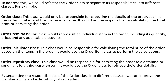For example: an Order class, which would only be responsible for capturing the details of the order such as the order number and the customer name — not for calculating the total price or persisting the order. An OrderItem class, which would represent an individual item in the order including its quantity, price, and any applicable discounts. An OrderCalculator class, which would be responsible for calculating the total price of the order based on the items, using the OrderItem class to perform the calculation.